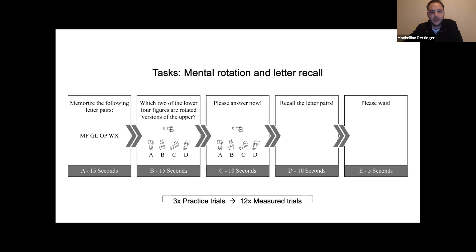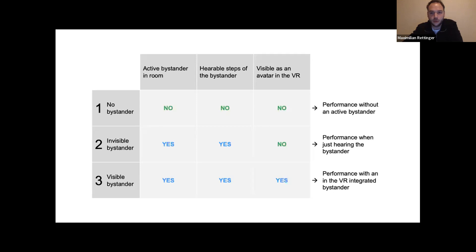The sequences were identical for all three conditions: visible, invisible, and no-bystander. In the no-bystander condition, the examiner left the room after the practice tries, which was sensed by the sound of the door and footsteps outside. In the invisible-bystander condition, a bystander was physically present in the room but not visualized in VR.